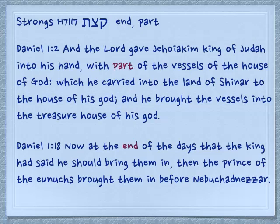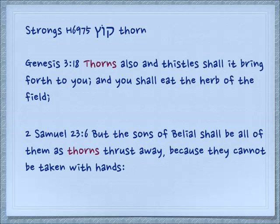Daniel 1:18 — Now at the end of the days that the king had said he should bring them in, then the prince of the eunuchs brought them in before Nebuchadnezzar. We're going to talk about the end of days later. Here is another word where the end of the thing is very important: kuts, meaning a thorn. The important part of the thorn is the end of it, the point of it.